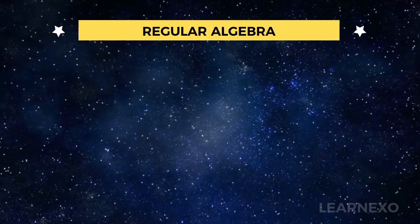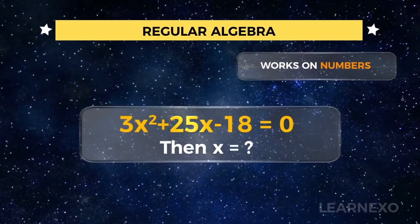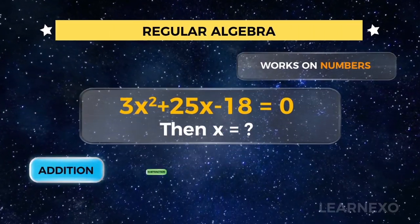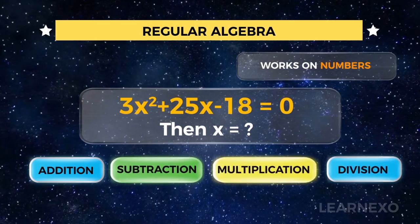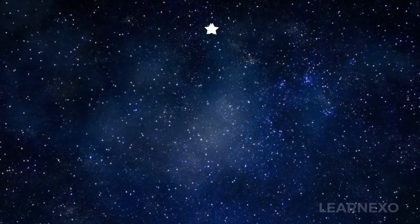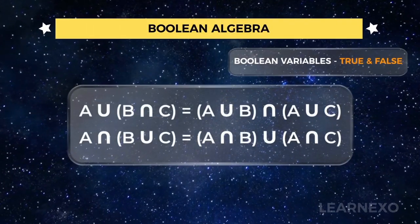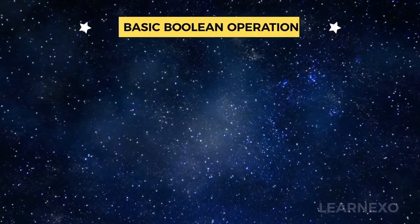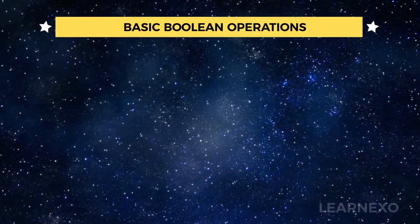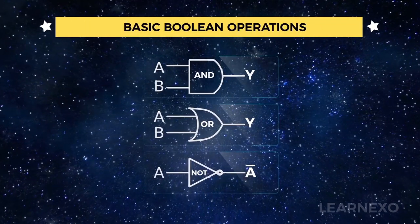Regular algebra works on numbers, and its basic operations are addition, subtraction, multiplication, and division. But Boolean algebra works on Boolean variables — true and false. The basic Boolean operations are AND, OR, and NOT.